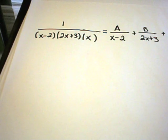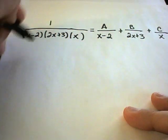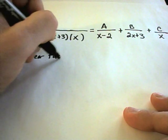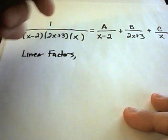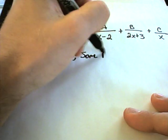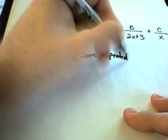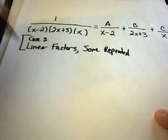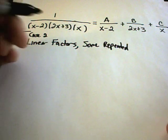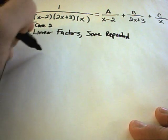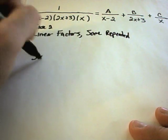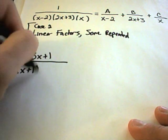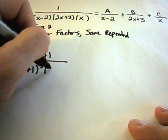Case 2 is when you have only linear factors but some are repeated. For example, suppose your rational function is (3x plus 1) over (x plus 1) cubed times x.